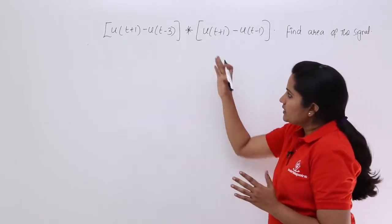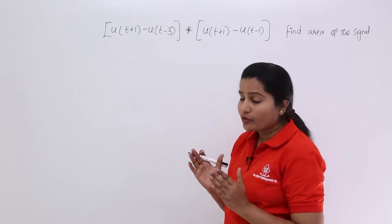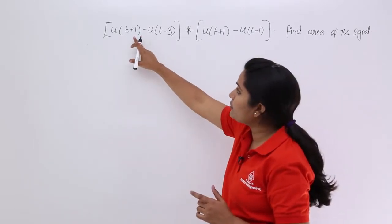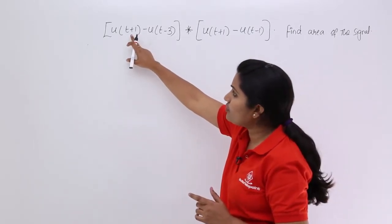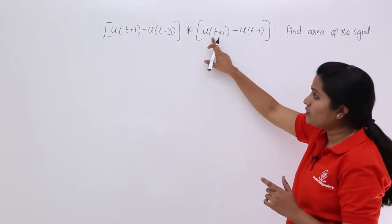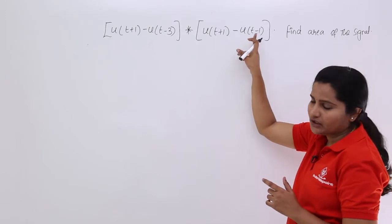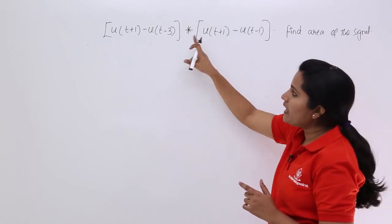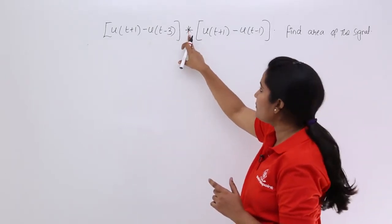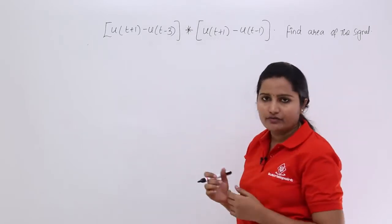This convolution of unit steps, I am going to expand using the distributive property. I am going to convolute u(t+1) with u(t+1) as well as u(t-1) individually, and minus u(t-3) convolution with u(t+1) and u(t-1) individually.